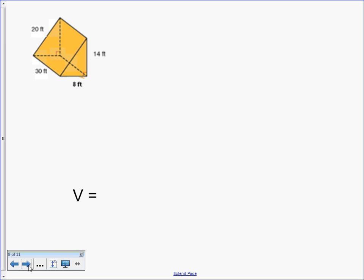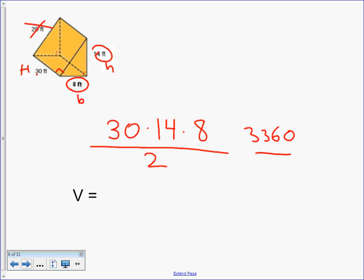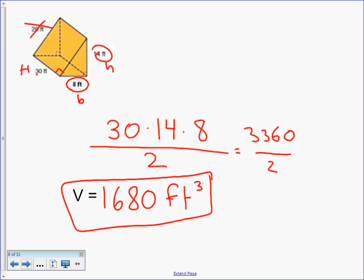Another triangular prism. Volume, base times height. Little b times little h times big H height. There's your right angle. We don't need the 20 for volume. So it's 30 times 14 times 8, but it's a triangle, divided by 2. Always divide by 2 with a triangle. So 3,360 divided by 2 equals 1,680 feet cubed. So many of you lost points just for not putting the units squared or the units cubed. It's part of the answer. If you put it, even if your answer was wrong, you still got a point.